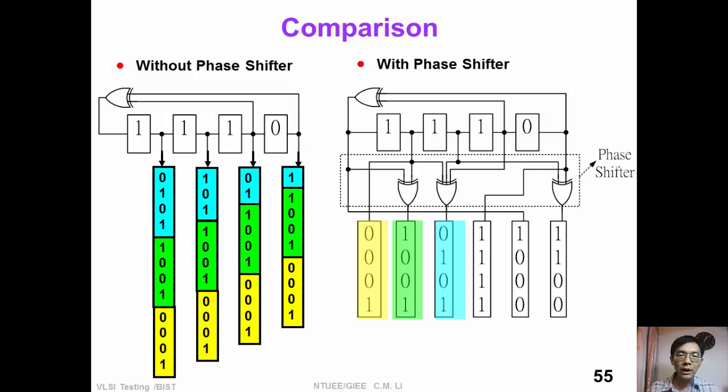Now let's have a comparison. On the left hand side is a test pattern generator without phase shifter. We can see that on the diagonal line, the bits are the same, which results in the structural dependency problem.